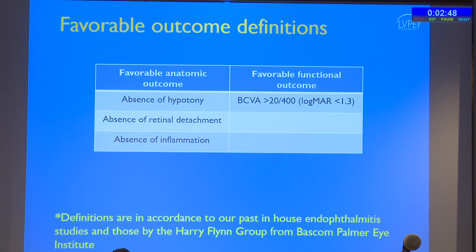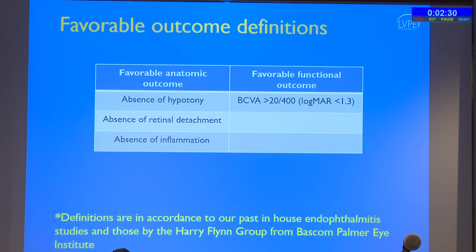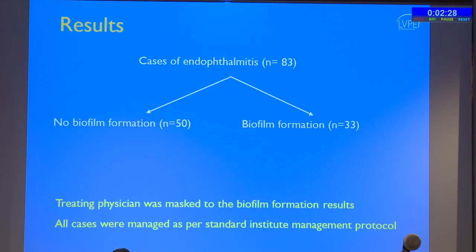Further clinical management was as per institute protocol; multiple papers from LVPEI have described this protocol, one of the most cited papers from a couple of decades ago. Favorable anatomic outcome was defined as absence of hypotony, absence of retinal detachment, and absence of inflammation at the last visit, with minimum follow-up of three months. Favorable functional outcome was best-corrected visual acuity greater than 20/400 or logMAR less than 1.3. Overall, the study had 83 eyes: 50 biofilm-negative and 33 biofilm-positive.